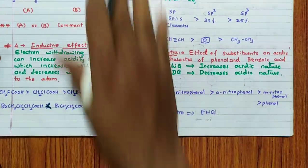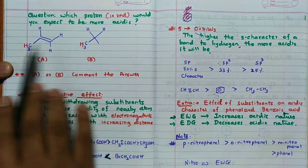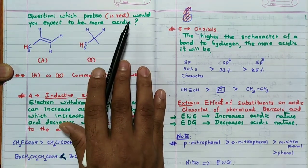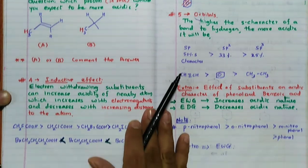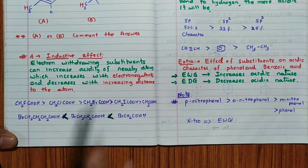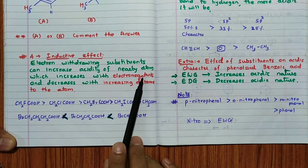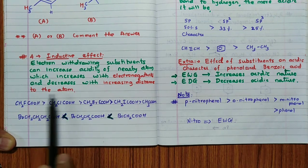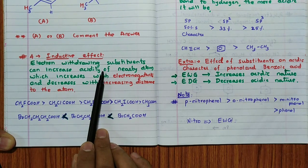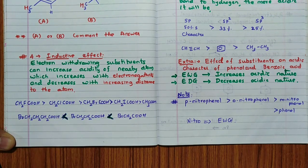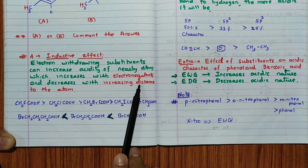The fourth factor is the inductive effect. A question may ask you to identify which of two marked protons (labeled in red) is more acidic — you need to comment whether it is A or B. In the inductive effect, electron-withdrawing substituents can increase the acidity of nearby atoms. This effect increases with electronegativity and decreases with increasing distance from the atom. Very important: electron-withdrawing substituents increase the acidic nature.